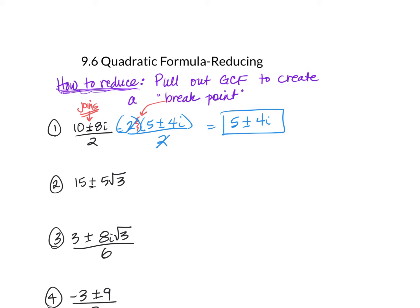Let's look at number 2. Looks like I forgot the denominator — this is going to be over 10. My GCF on the top would be 5, so I would have 5 times (3 plus or minus the square root of 3) over 10. Now I can't mess with the 3s, but I can reduce. The 5 will go into 10 and leave me 2, so my final answer would be 3 plus or minus the square root of 3 over 2.